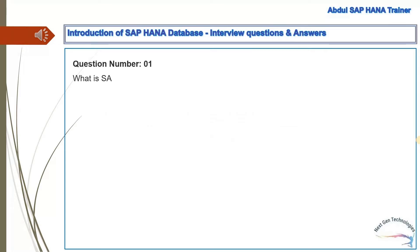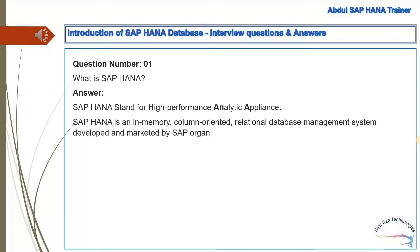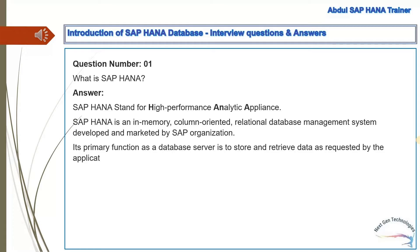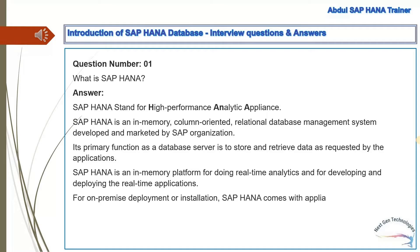Question 1: What is SAP HANA? Answer: SAP HANA stands for High Performance Analytic Appliance. SAP HANA is an in-memory, column-oriented, relational database management system developed and marketed by SAP. Its primary function as a database server is to store and retrieve data as requested by applications. SAP HANA is an in-memory platform for doing real-time analytics and for developing and deploying real-time applications. For on-premise deployment, SAP HANA comes with the appliance delivery model or the tailored data center integration model.